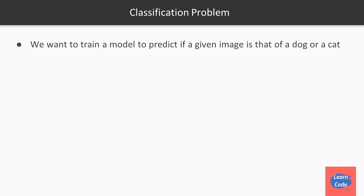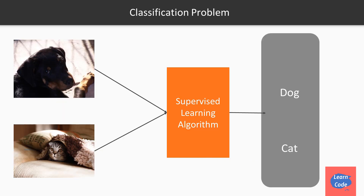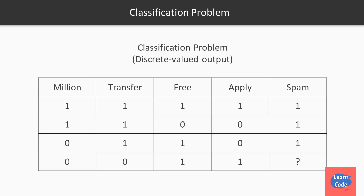Let's say we want to predict if a given image is that of a dog or a cat. We start with labeled training data and tell the supervised learning algorithm that this image is that of a dog and this image is that of a cat, and let it learn so that over time when we give it a new image, it can predict whether it's a dog or a cat. Similarly, identifying whether an email is spam or not is also a type of classification problem. The distinct part about a classification problem is that the output is always a discrete value — so in the case of spam or not spam, it's either 1 or 0.